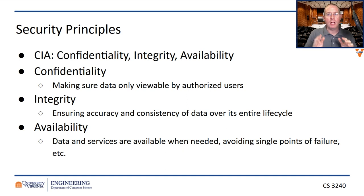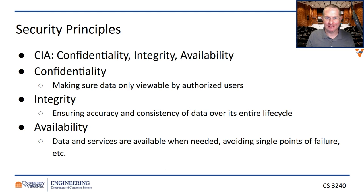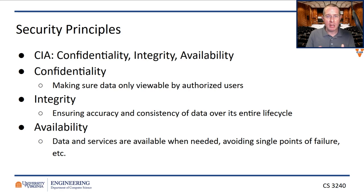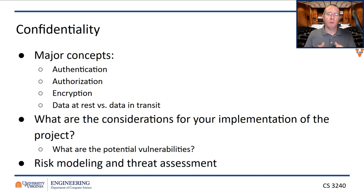What do we talk about when we say security? This is one mnemonic for thinking about security — there are a bunch of different versions, but they all end up around the same area: confidentiality, integrity, and availability. Confidentiality has to do with what data you have and who can see it. Integrity is whether the data is correct. Availability is whether you can get to the data — or is it being hit by a denial-of-service attack? Is the system down? These are the three main vectors, and each one breaks down in its own way.